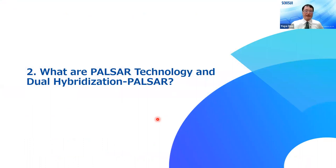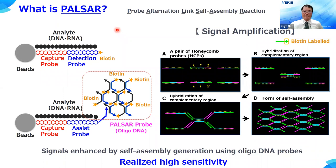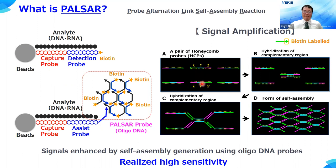So what are the Pulsar technology and the dual hybridization Pulsar? Pulsar is a signal amplification technology with the principle of aggregating biotin labels by the self-assembly process of its oligo-DNA. In this technology, we prepare a pair of honeycomb probes which have complementary sequences, shown as X, Y, Z and X prime, Y prime, Z prime. In a certain condition, the Y region of one honeycomb probe hybridizes to the Y prime region of another probe. Then, X and Z regions hybridize to X prime and Z prime regions. This hybridization then forms a poly-DNA via a self-assembly process, and that realizes high sensitivity of the signals.